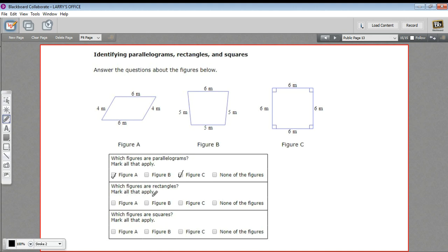The next one is which figures are rectangles? Well, a parallelogram isn't necessarily a rectangle unless it has four 90-degree angles. But a square is a type of rectangle. So we're going to answer C for this one.